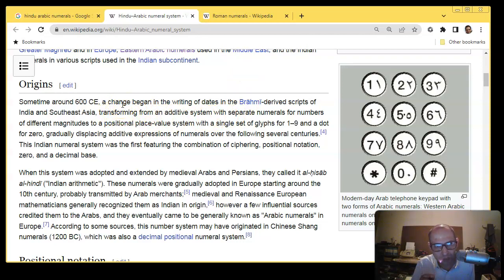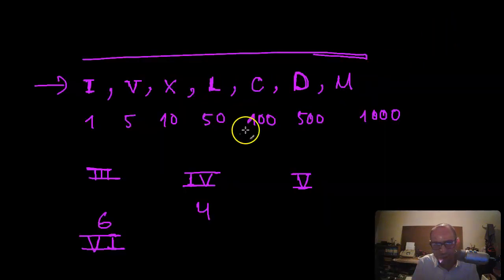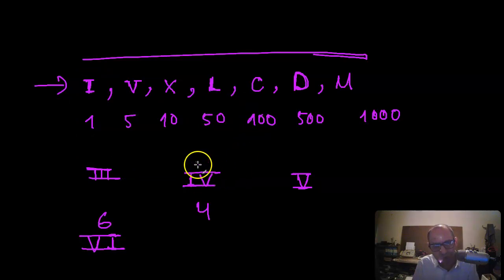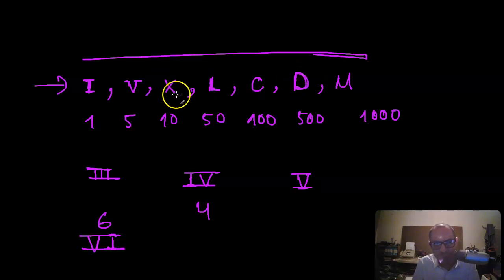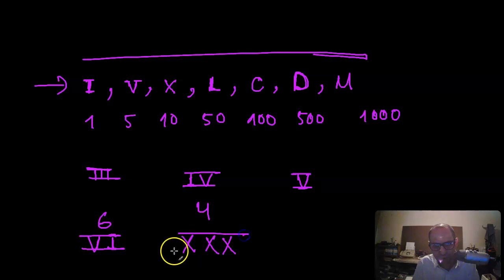The change was a transformation from an additive system with separate numerals for numbers of different magnitudes to a positional place-value system. Originally, like the Roman system, they used an additive system — for example, three I's make three, or a five combined with a one in a specific way makes four or six. A 30 would be three X's — that's an additive system.